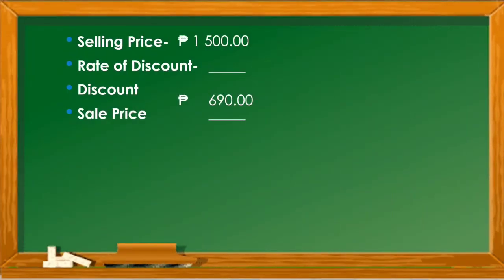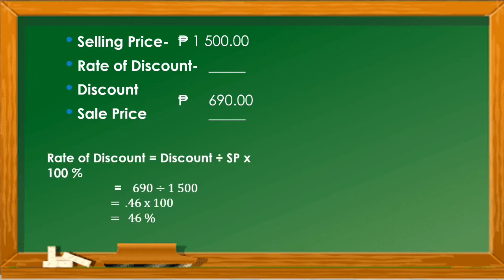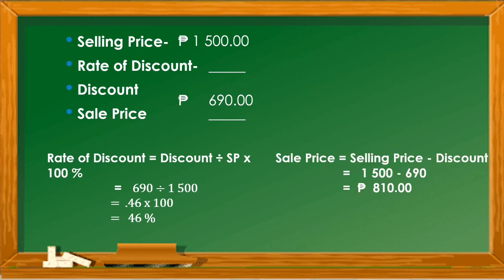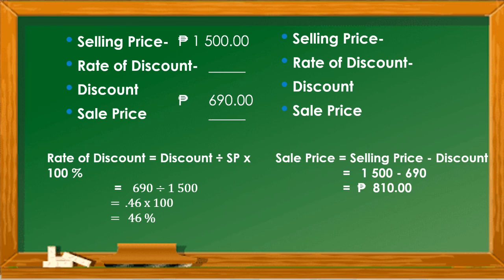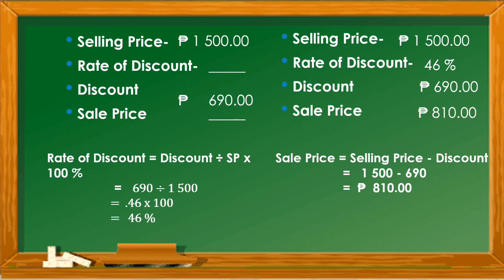Another practice to solve: 1,500 pesos for the selling price with a discount of 690. We are now going to look for the rate of discount and the sale price. For the rate of discount: discount divided by sale price times 100% — 690 ÷ 1,500 = 0.46 × 100 = 46%. For the sale price: 1,500 minus 690 equals 810 pesos. So the rate of discount is 46% and the sale price is 810 pesos.